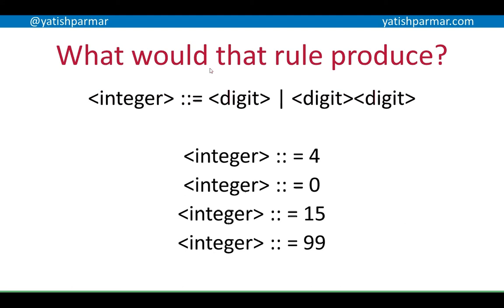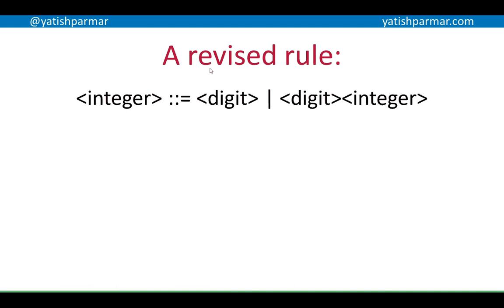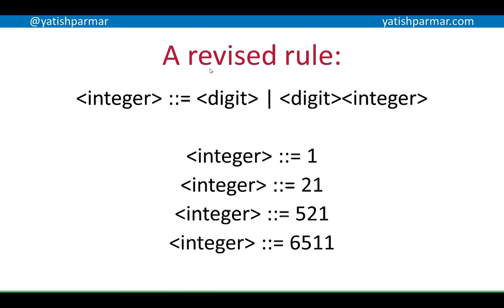But if I wanted to store 673, my rule at the moment wouldn't let me do that. So how could I develop this rule further? A revised rule would be: integer is defined by digit, or digit integer. You can see this becomes a recursive rule because an integer can be defined by the use of an integer. This would let me produce 1, 21, 521, 651, and due to the recursive nature of this, I could produce an integer of infinite range.